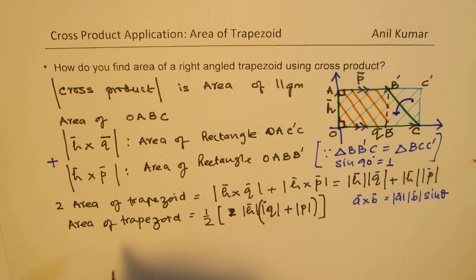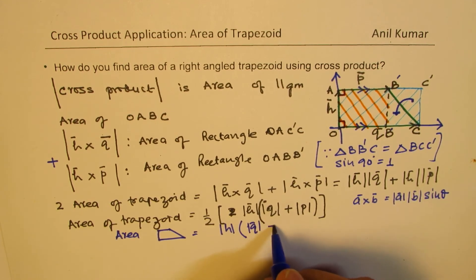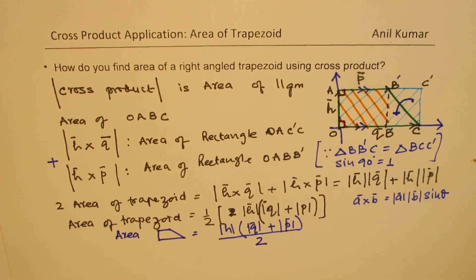That area of this trapezoid, in this case, we are using a right angle trapezoid, is magnitude of H times magnitude of Q plus magnitude of P over 2. Is that clear to you? So, we get this particular formula, which is a standard formula to find the area of a trapezoid using cross product in the case of a right angle trapezoid.